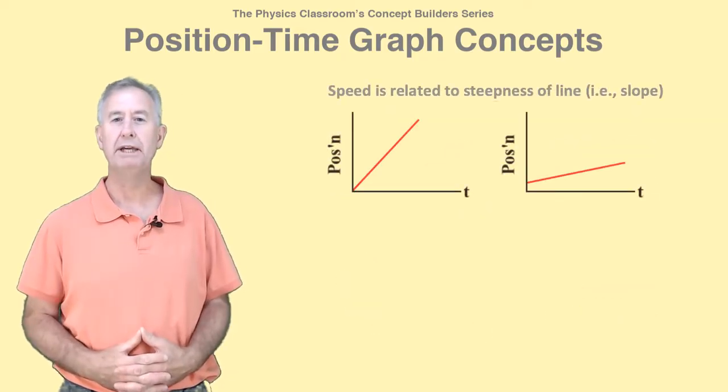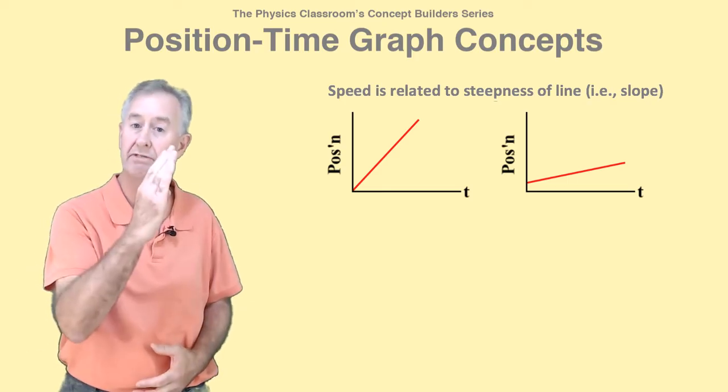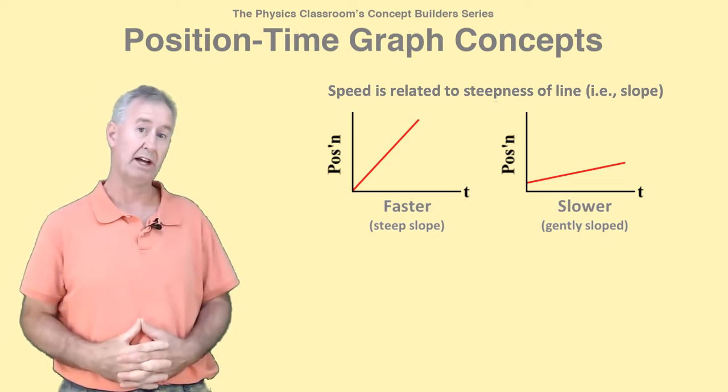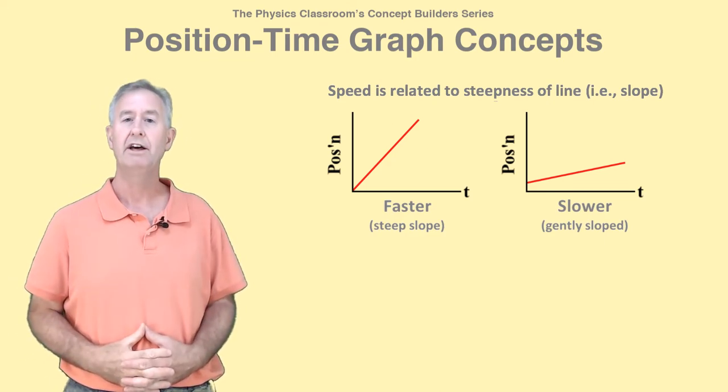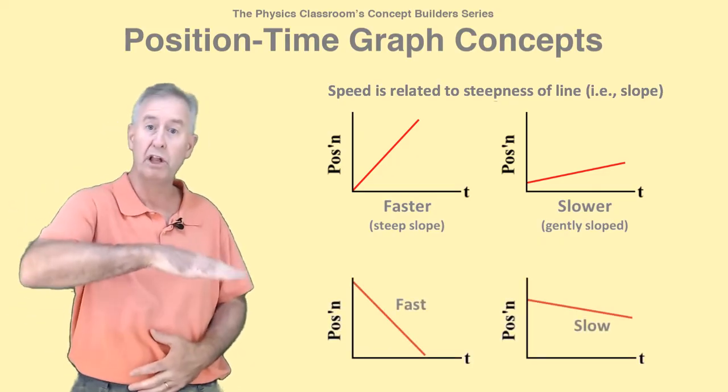If you ever have to make speed comparisons between objects, then focus upon the steepness of the lines that represent their motion. A steep line is for a fast object, and a gently sloped line represents a slow object. This idea of steepness applies to negatively sloped lines as well.